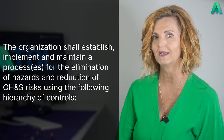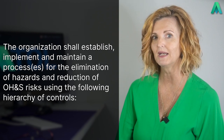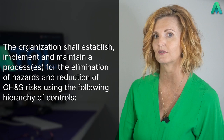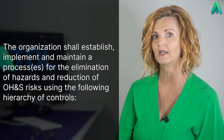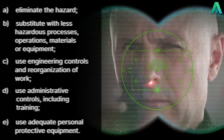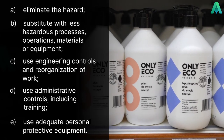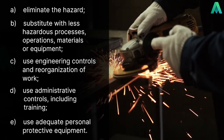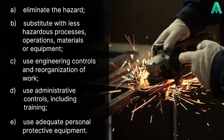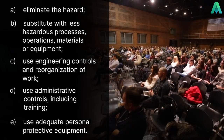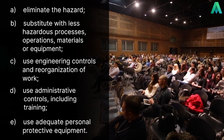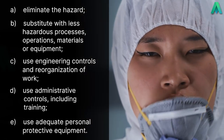This clause gets straight into the requirements and gives us a nice list to work with and states that the organization shall establish, implement and maintain a process for the elimination of hazards and reduction of OH&S risks using the following hierarchy of controls. A, eliminate the hazard. B, substitute with less hazardous processes, operations, materials, or equipment. C, use engineering controls and reorganization of work. D, use administrative controls, including training. E, use adequate personal protective equipment.